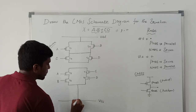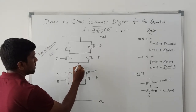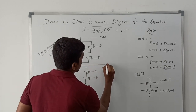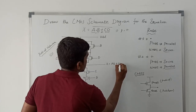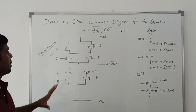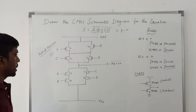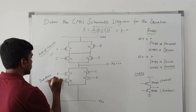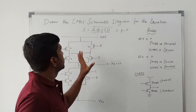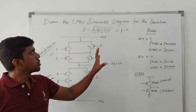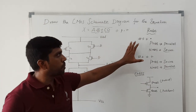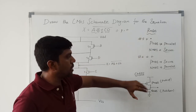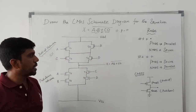The pull-down network is connected to VSS. You can get the output between the pull-up network and pull-down network. So this output equation is AB plus CD, whole complement. This is the schematic diagram for the given boolean expression. In your examination, if any expression is given, first find the operators, then decide whether PMOS and NMOS are connecting in parallel or series based on the rules, and draw the schematic diagram.